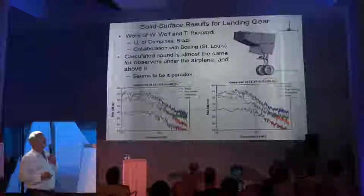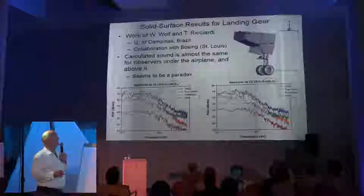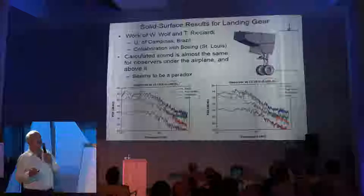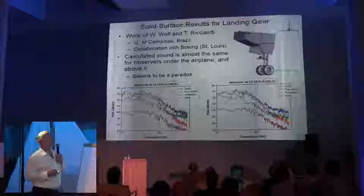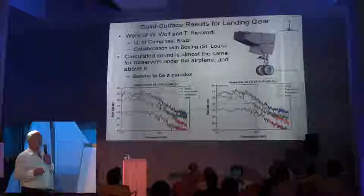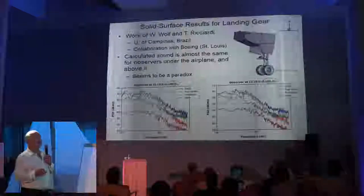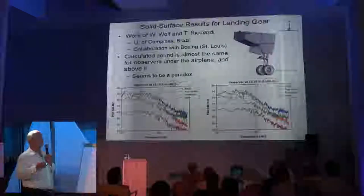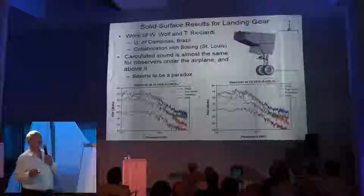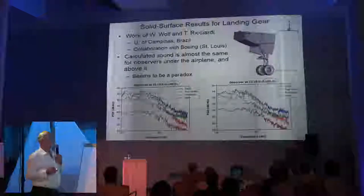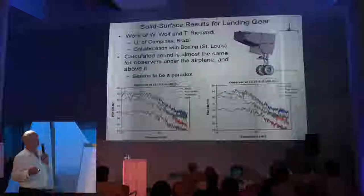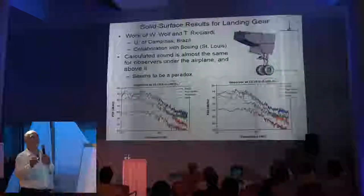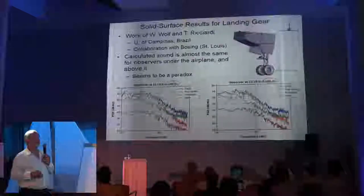This work was done in collaboration with Boeing by Professor Wolf and Mr. Ricciardi in Brazil. The St. Louis group is doing complex simulations — this nose landing gear has pretty complete geometry. I kept telling them to show me that their surface integral is accurate. So I convinced them to apply the formula for an observer down at negative 100 units, and for an observer up above the airplane. What you find is that the integral gives almost exactly the same result. But the landing gear noise, especially from the cavity, doesn't go equally up to the sky and down to the ground, so something is wrong.